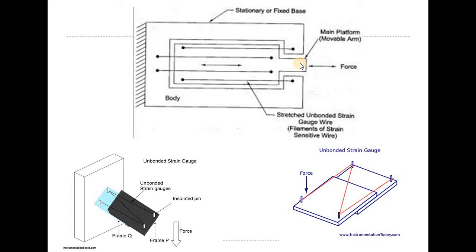The moveable arm moves when pressure is applied. The wire depends on the length of the outside. One of the main principles is R equals rho L by A — resistance is determined by resistivity, length, and cross-sectional area.